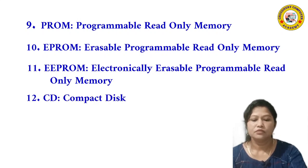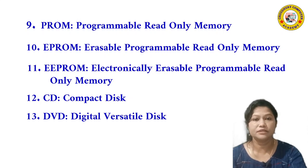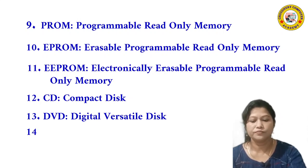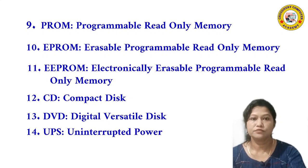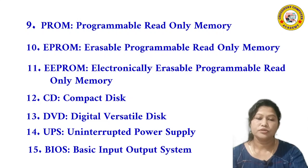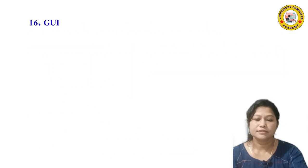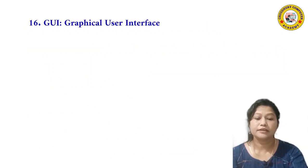Number 12: CD — full form is Compact Disc. Number 13: DVD — full form is Digital Versatile Disc, also known as Digital Video Disc. Number 14: UPS — full form is Uninterrupted Power Supply. Number 15: BIOS — full form is Basic Input Output System. Number 16: GUI — full form is Graphical User Interface.